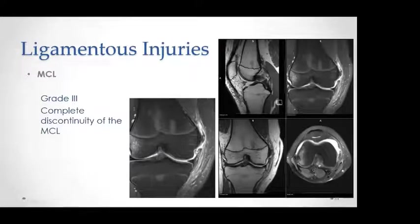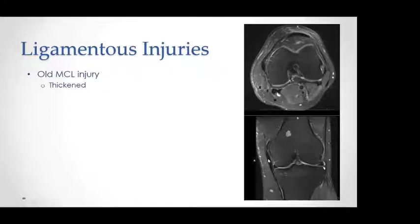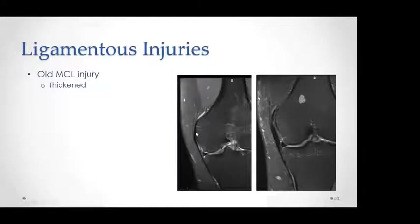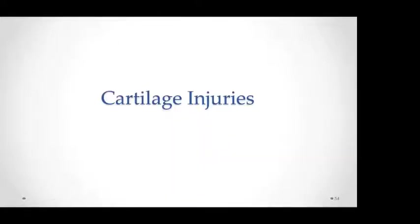Grade 3 MCL injury shows complete discontinuity and tear of the femoral attachment of the medial collateral ligament. The challenge with chronic ligamentous injuries is that there is no edema or striation — only thickening of the ligament. You appreciate this by comparing to how a normal ligament looks. For example, a normal MCL versus a chronic MCL sprain injury shows only thickening of the MCL.